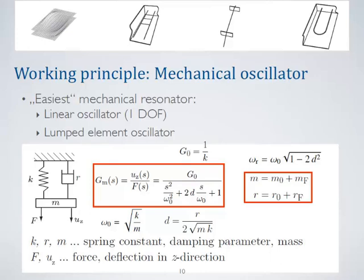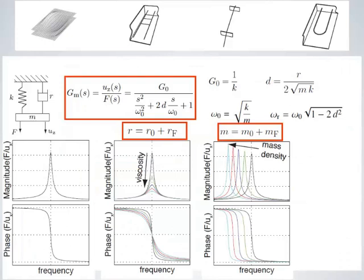What you see here are the resonance curves of this transfer function, for example in the unperturbed state. If you increase the damping or viscosity, the damping would increase. If you increase the mass density, the resonance frequency of your device would shift to lower resonance frequencies.